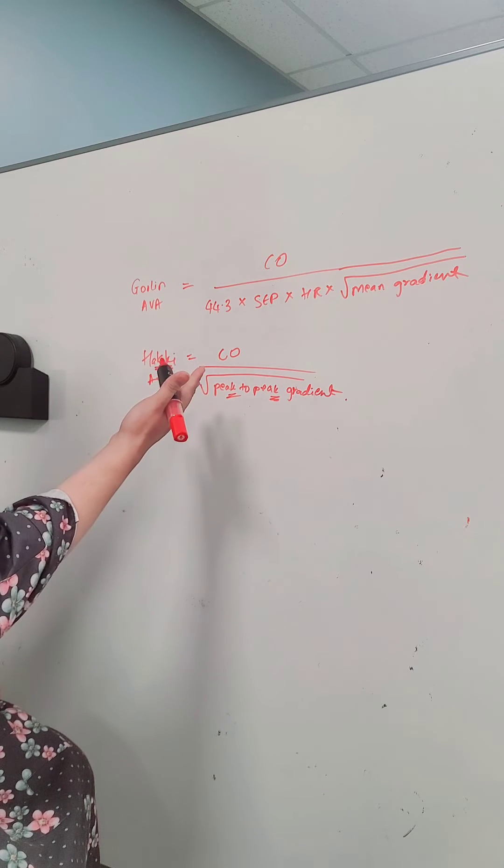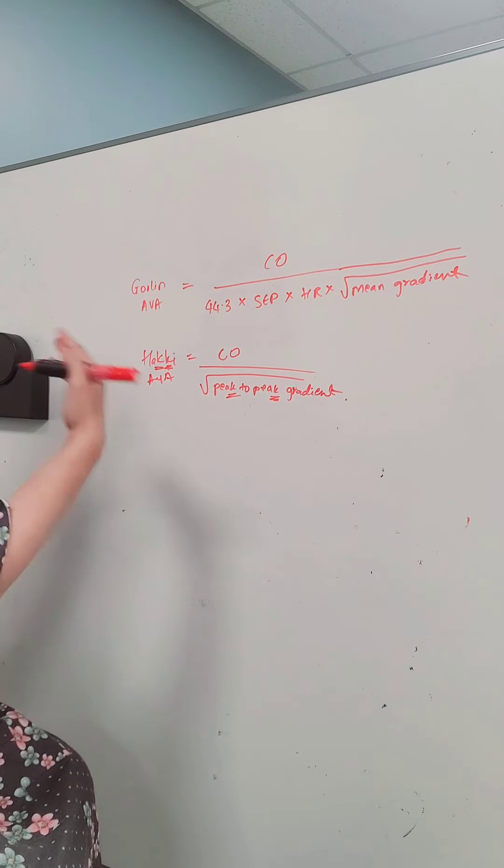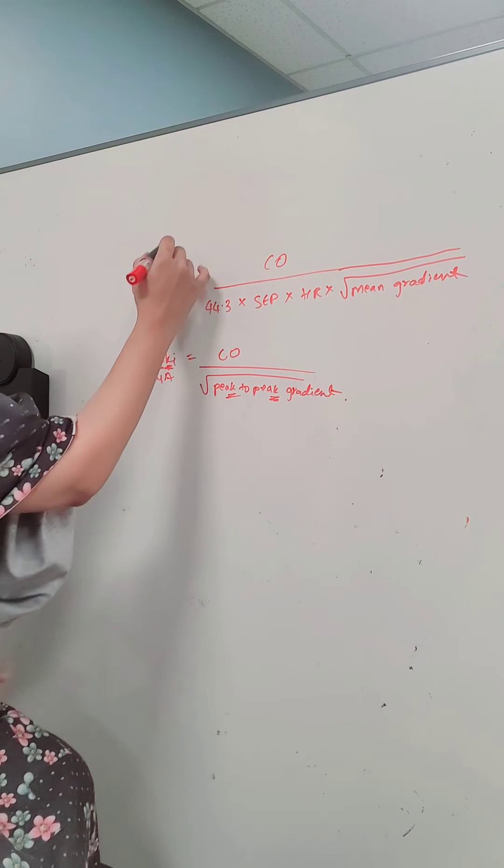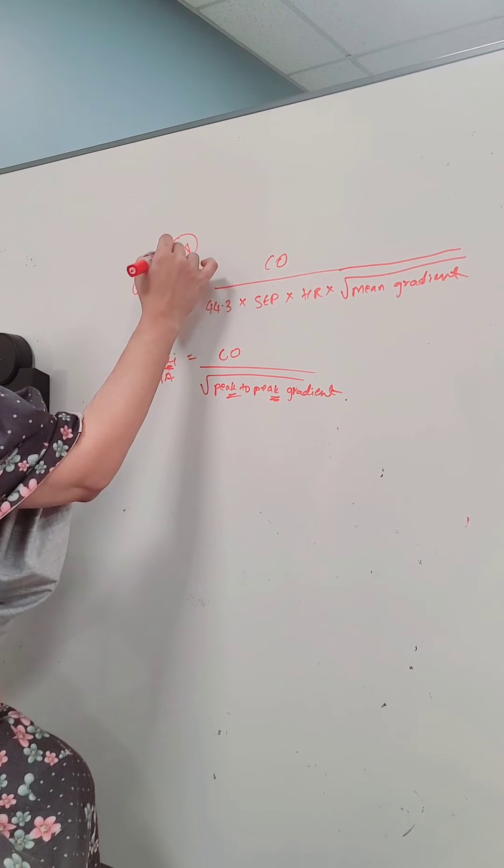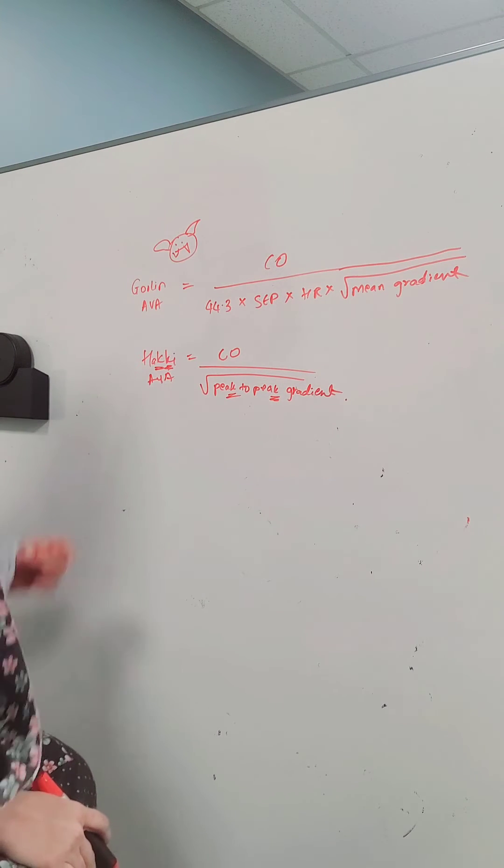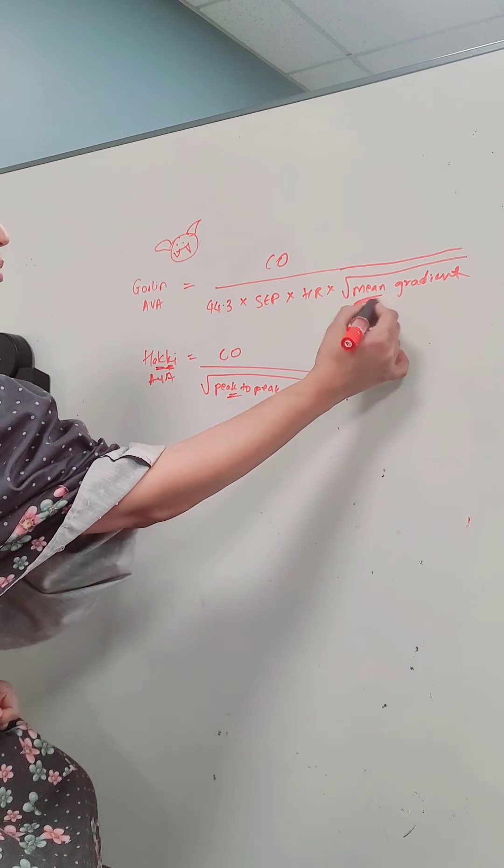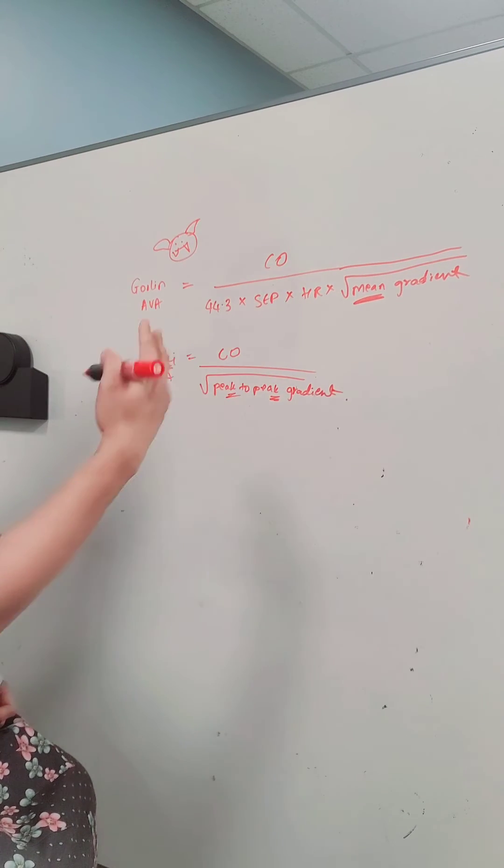And then the Gorlin equation and I think of Gorlin sounds similar to Goblin which is a mythical creature that you see in fantasy shows. So Goblin is a mean monster so that helps me remember that it's the square root of the mean gradient.